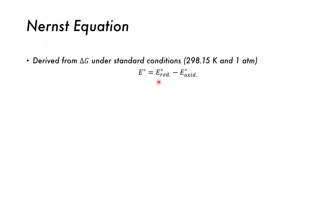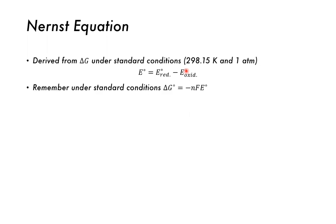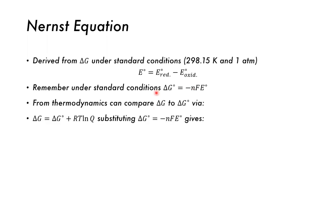The standard potential is equal to the standard potential of the reduction reaction minus the standard potential of the oxidation reaction. Usually the oxidation reaction is a reference reaction — the standard calomel electrode or the standard hydrogen electrode. Recall that delta G under standard conditions, the Gibbs free energy change, is equal to minus nFE°, where n is the number of electrons transferred, F is the Faraday constant, and E is the standard potential.